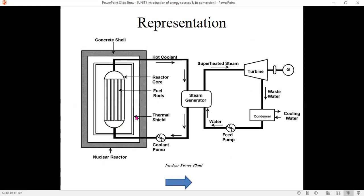Coming to the representation, as I told, it consists of a nuclear reactor, steam generator, turbine, condenser, and pump. When we compare this with the thermal power plant, we have a boiler. In place of the boiler, we have a nuclear reactor. Here in the nuclear reactor, we have connecting rods or fuel rods.